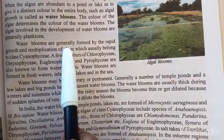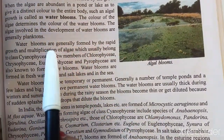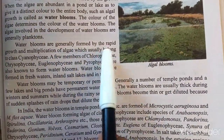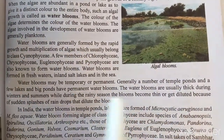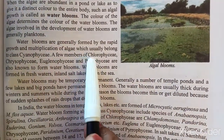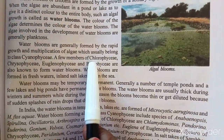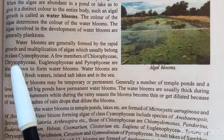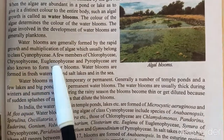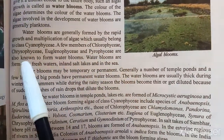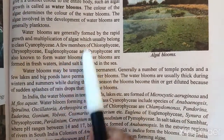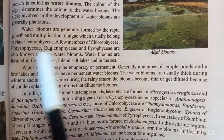Water blooms form rapidly through multiplication and usually belong to the class Cyanophyceae. They can also be members of Chlorophyceae, Cryptophyceae, Euglenophyceae, and Dinophyceae — all of which are known to form water blooms.